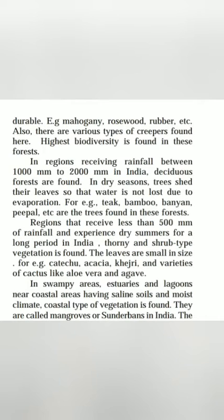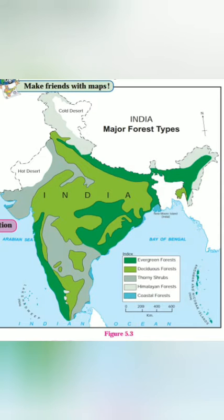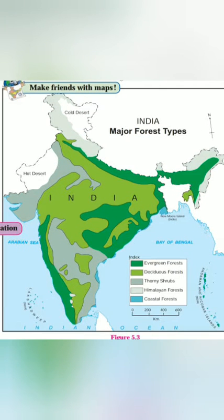During summer, the heat is quite a lot. Therefore, before the summer, these trees shed their leaves and a new shoot starts coming up. The water stored by the tree is not lost during the summer season. For example, teak, bamboo, banyan, peepal, etc. are the trees found in this deciduous forest.